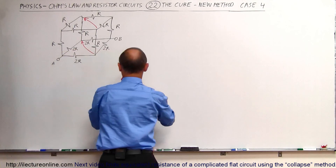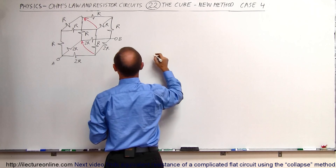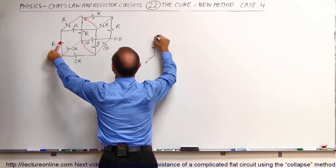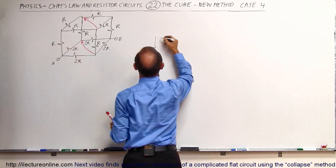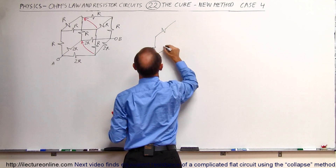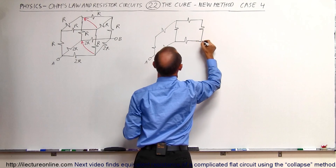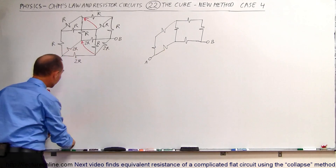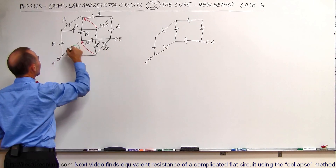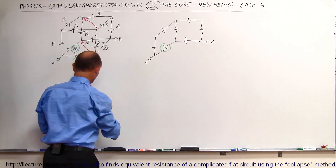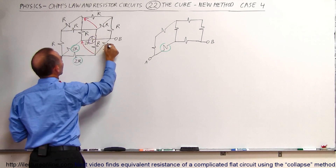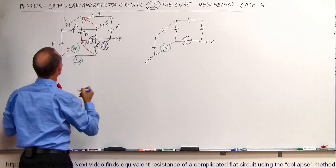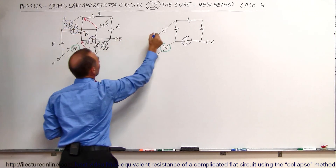So we end up with a flat circuit. This is point A, and we have this resistor right here that stays by itself. These collapse in on each other. Using color to show the process: we collapse these two resistors together to form this resistor, then collapse these two resistors together to form this resistor, and combine these two resistors together to form this resistor.